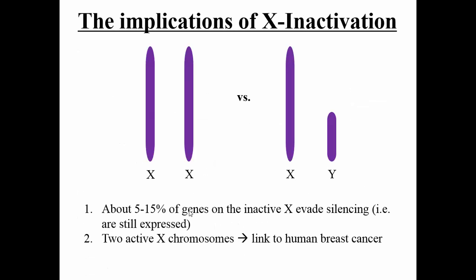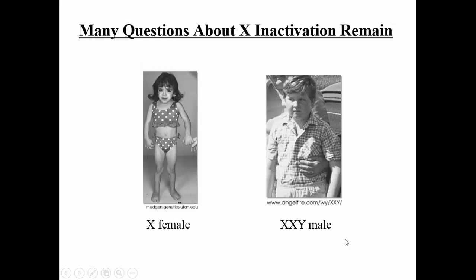What are the implications of X inactivation? About 5 to 15% of the genes on the inactive X chromosome evade silencing, so some are still expressed. If we have expression of both X chromosomes, it's termed over-X inactivation, and this is often linked to abnormalities in humans such as breast cancer. Many questions about X inactivation remain — we don't totally understand it.